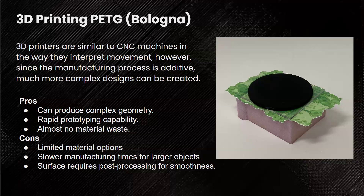Some cons: you're limited to what plastic you can use, though there are many options. If you're trying to manufacture something significantly larger, print time scales to match. It also leaves the surface rough and striated — you can see that texture in the background of the slide — and a lot of the time if you want it smooth you need to post-process, either by sanding or dissolving in some way.